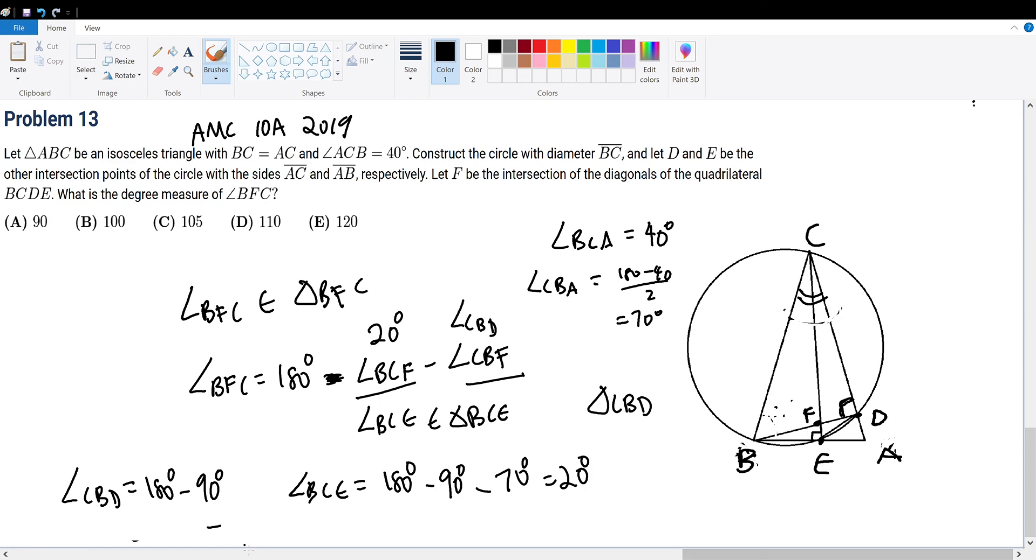And angle BCD we're given, which is 40 degrees, so CBD is 50 degrees. So now we can find the solution to this question. The solution will be 180 minus 20 minus 50, which is 110 degrees. And we look up and we see that answer choice D has 110, so that's our solution. Thank you.